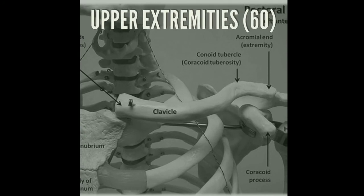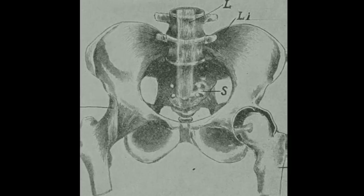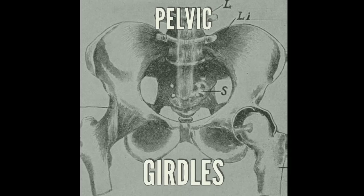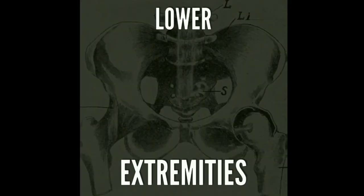Upper extremities — 50 bones. Lower extremities.